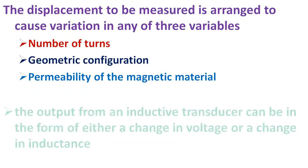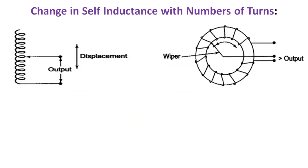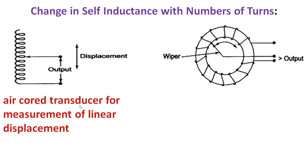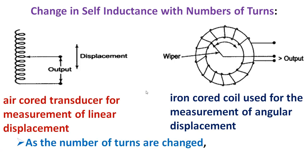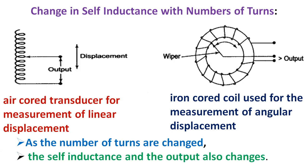Inductive transducers are mainly used for the measurement of displacement, arranged to cause variation in any of three variables. There is a coiled transducer for measurement of linear displacement, and an iron core coil used for the measurement of angular displacement. As the number of turns are changed, the self-inductance and output also change. The output is taken between the two ends and is proportional to the self-inductance, which changes because of the change in the number of turns.